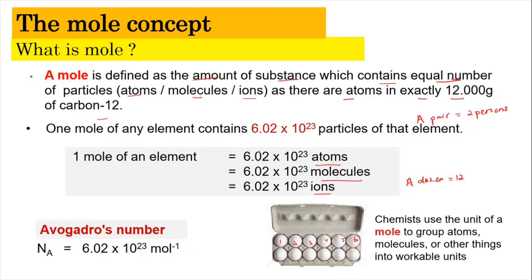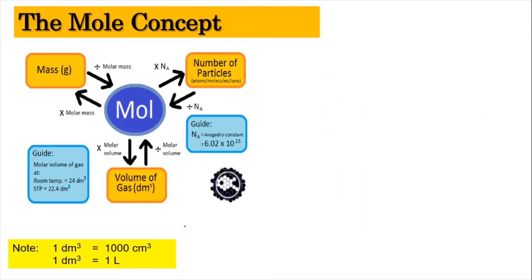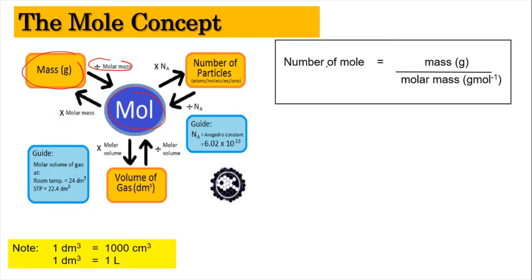This value is also consistent with the Avogadro constant. Now we're going to look into the interconversion between moles. The best way to look at it is to focus on the middle part, which is mole. Mole can be obtained when we have our mass. In order to get the mole, we divide our mass by the molar mass. So the first formula is: number of mole = mass divided by molar mass.